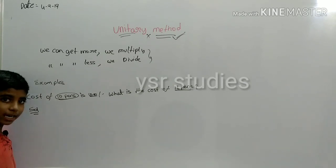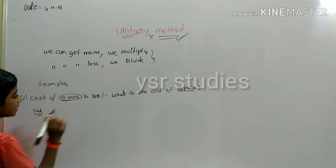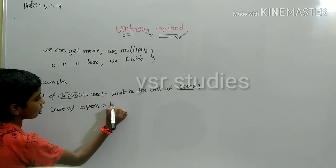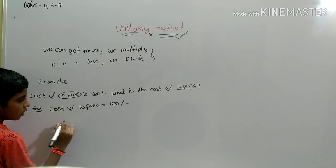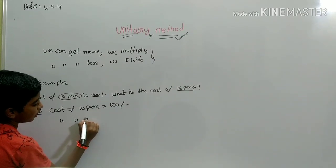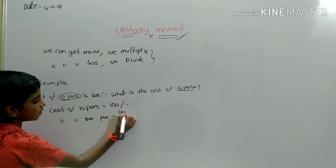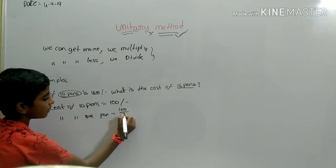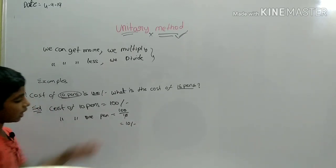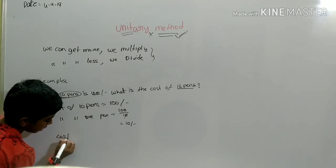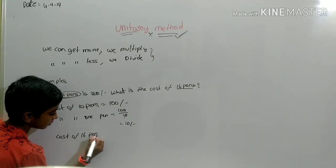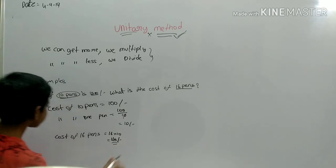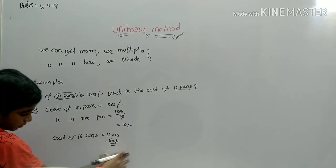The long cut method goes step by step so we can learn easily. Cost of 10 pens is equal to 100 rupees. So cost of 1 pen is equal to 100 divided by 10. Therefore, cost of 16 pens is equal to 16 multiplied by 10, which is 160 rupees. This is the normal long cut method.